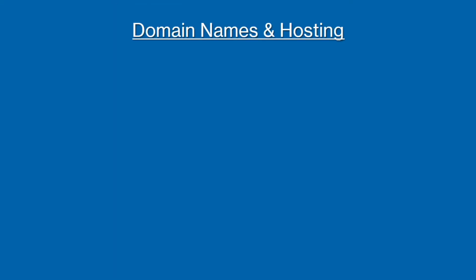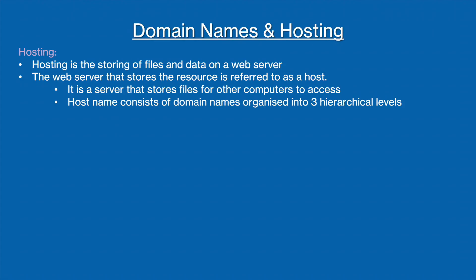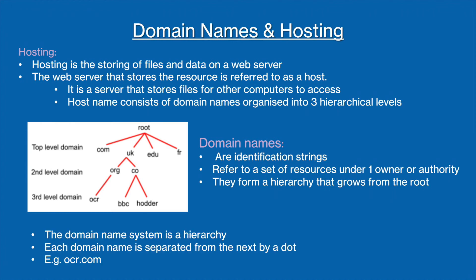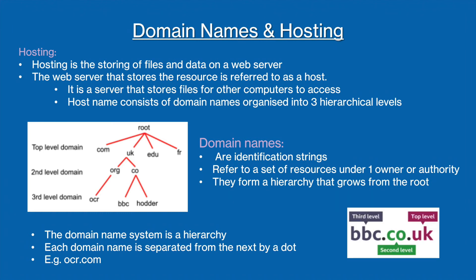You need to be aware of what domain names are and what hosting is. Hosting is where resources are shared on a web server called a host for other computers to access. The host name consists of domain names organised in three hierarchical levels. The domain name system is a hierarchy, as you can see in the picture on the left. The top level domain is generic to many websites and includes things like .com, .uk, .gov, etc. The second level denotes the type of organisation, so things like .co, .org, etc. And the third level is the organisation name, like OCR and BBC. Each of these domain names are separated by a dot — for example, a host name could be bbc.co.uk, where BBC is the third level domain, .co the second level domain, and .uk the top level domain.